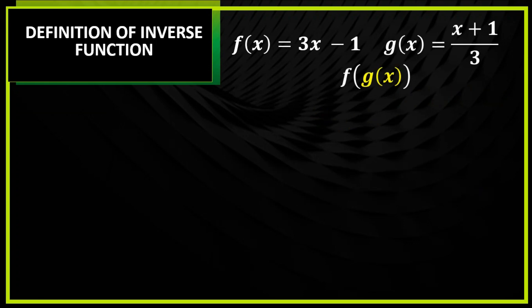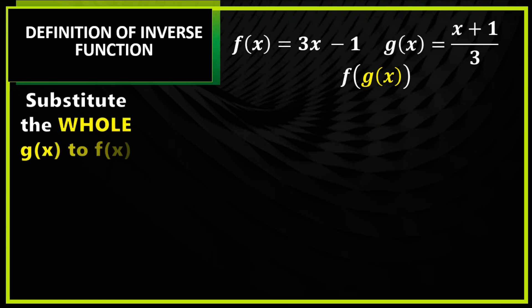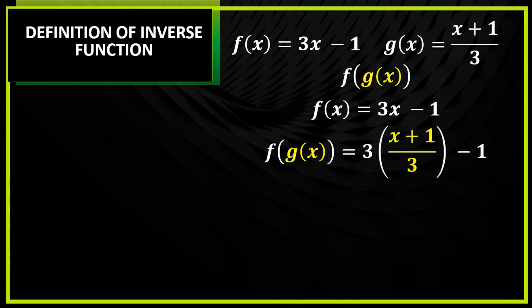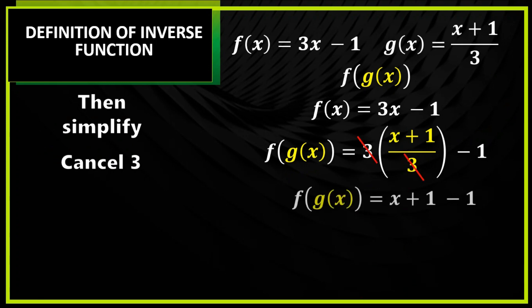So f of g of x — dito, i-substitute mo yung buong g of x doon sa f of x. So from 3x minus 1, magiging 3 times (x plus 1 over 3) minus 1, kung saan yung x natin napalitan ng buong g of x. After that, you will simplify — i-cancel yung 3, at ang maiwan ay x plus 1 minus 1. So 1 minus 1 is 0, kaya ang ating sagot ay x lang.